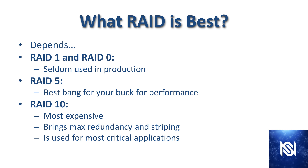So what type of RAID is best? The answer depends on the specifics and the applications running on that storage. RAID 0 and RAID 1 are seldom used in production — one has no redundancy and the other has no speed benefits. RAID 5 is known as the best bang for your buck for performance, since losing more than one disk simultaneously is extremely unlikely. RAID 10 is the most expensive, requiring the most disks, but it delivers maximum redundancy and striping — making it most often used for critical applications like email where data loss is unacceptable.